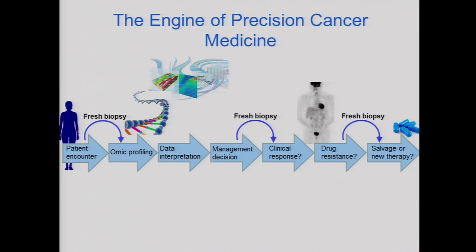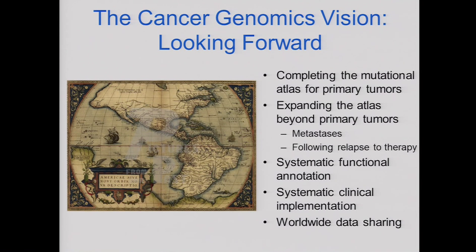What genomics is now doing for us in cancer is putting forth a new vision for how we need to think about clinical trials. The thinking is that patients who come in will generate some kind of omic profile — using fresh biopsy or archival tissue — with a way to interpret the data, make a decision, and monitor response. There may need to be a second biopsy in the clinical trial realm to understand whether the patient is responding and whether the pathway is being hit. At the point of resistance, another biopsy can inform salvage therapy or future combinations.